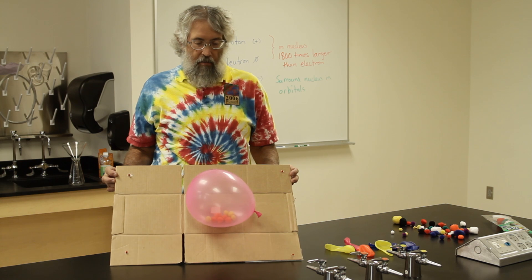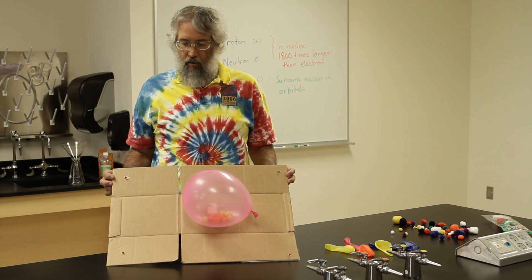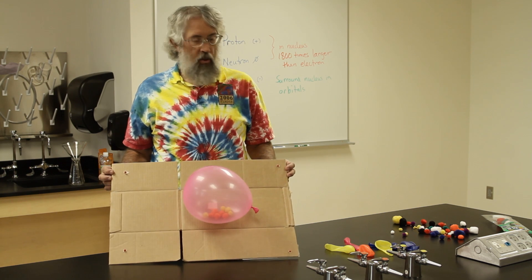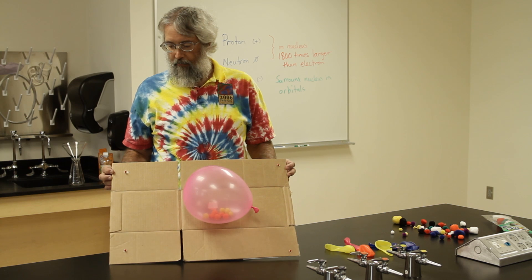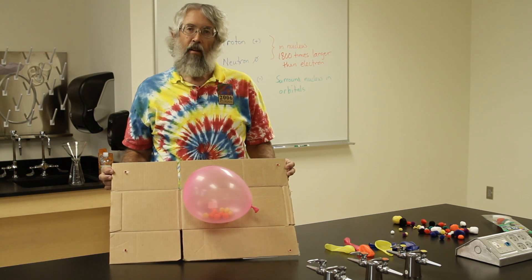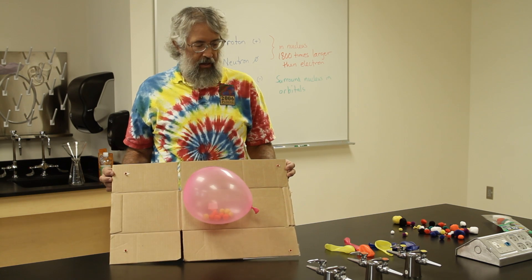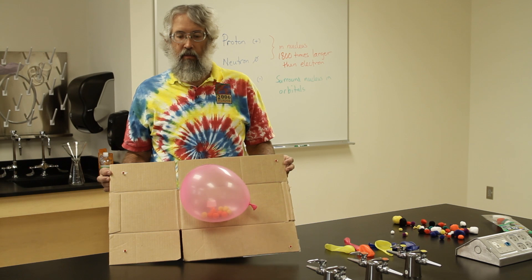Nucleus, much larger than the electrons, and the electrons surrounding the atom, or surrounding the nucleus. And so this is how we make a simple model of an atom.